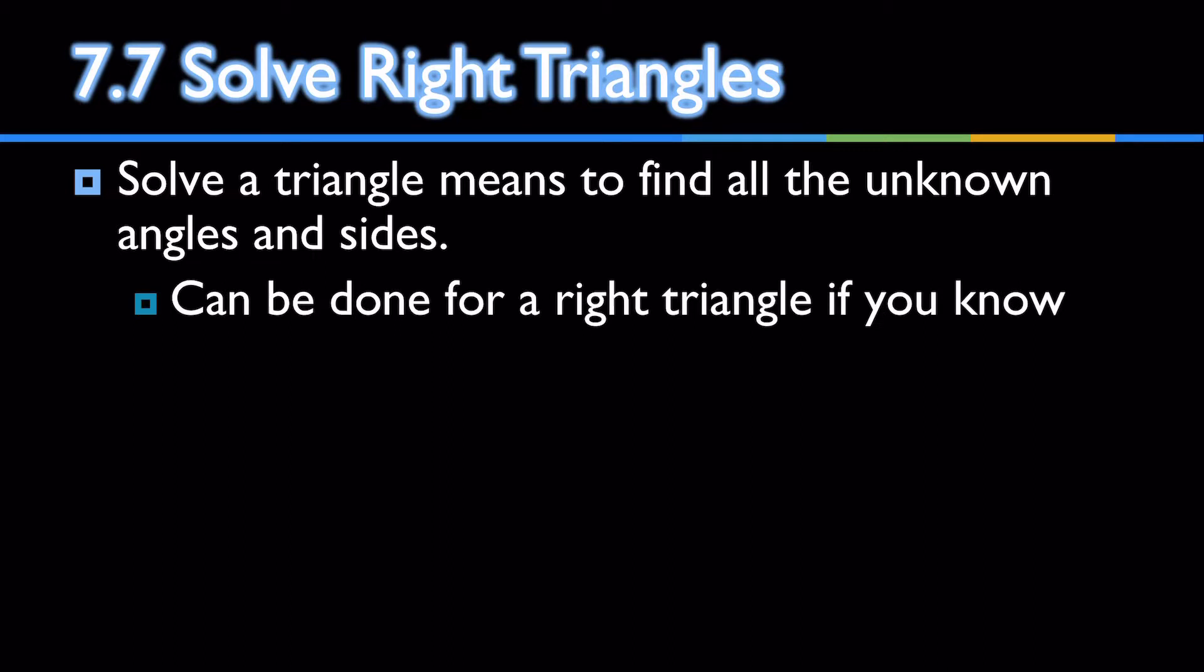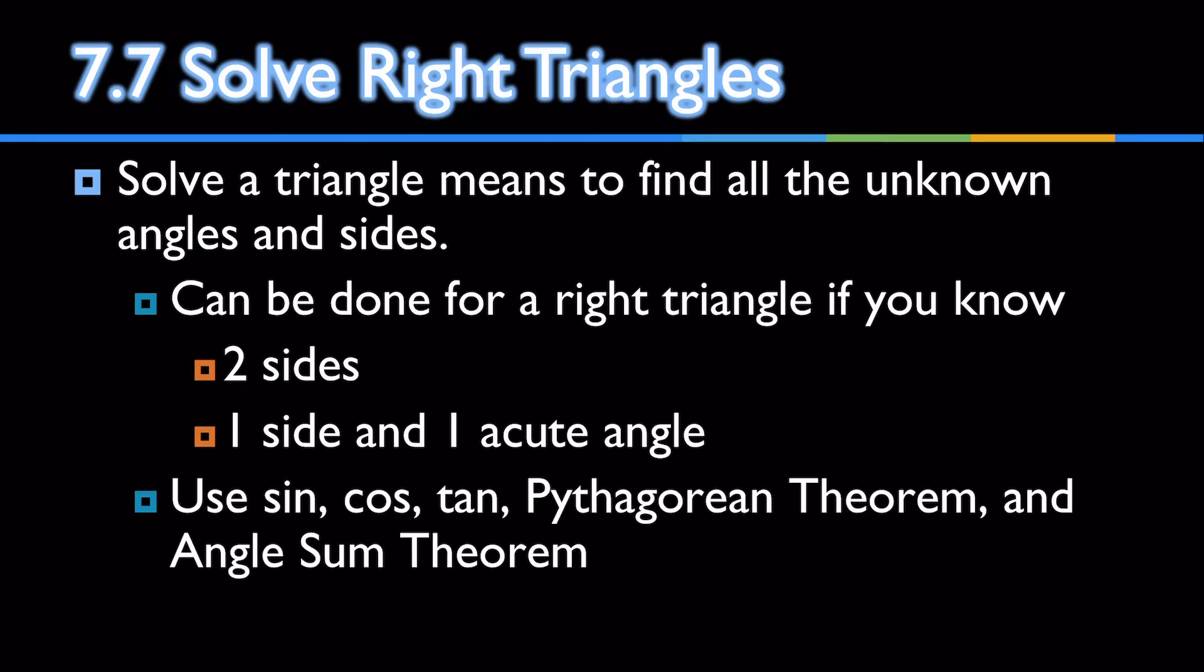You can do this for a right triangle if you know two sides or one side and one of the acute angles. You solve it by using sine, cosine, tangent, Pythagorean Theorem, the Angle Sum Theorem. Remember the Angle Sum Theorem is the sum of angles is 180 degrees.